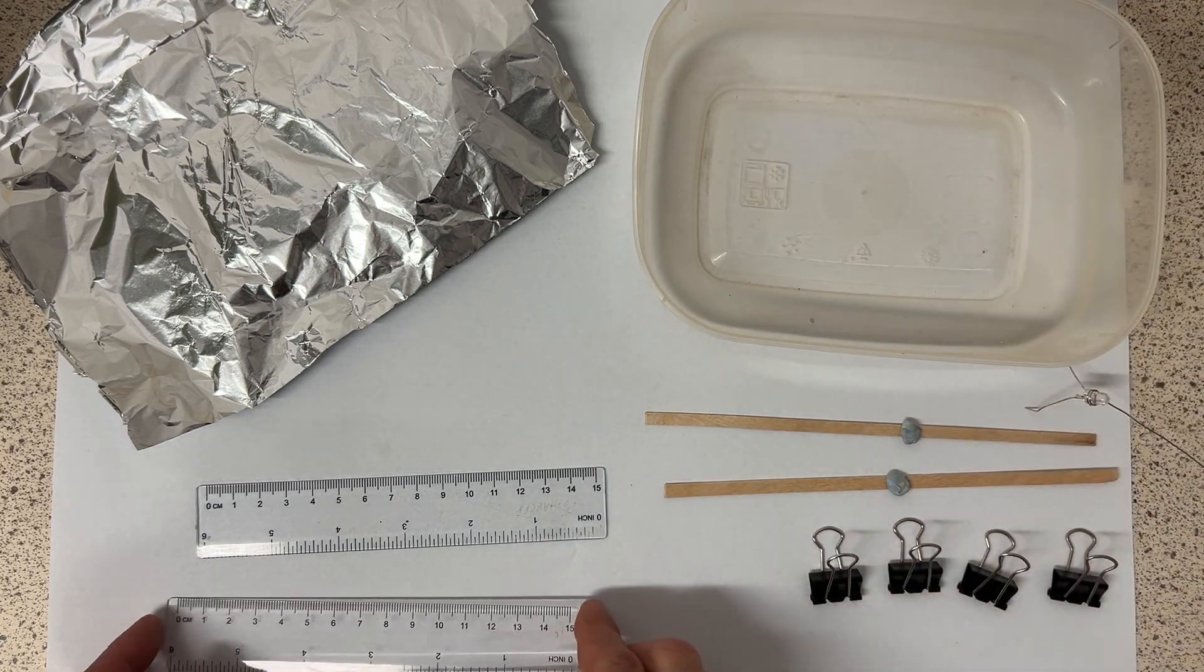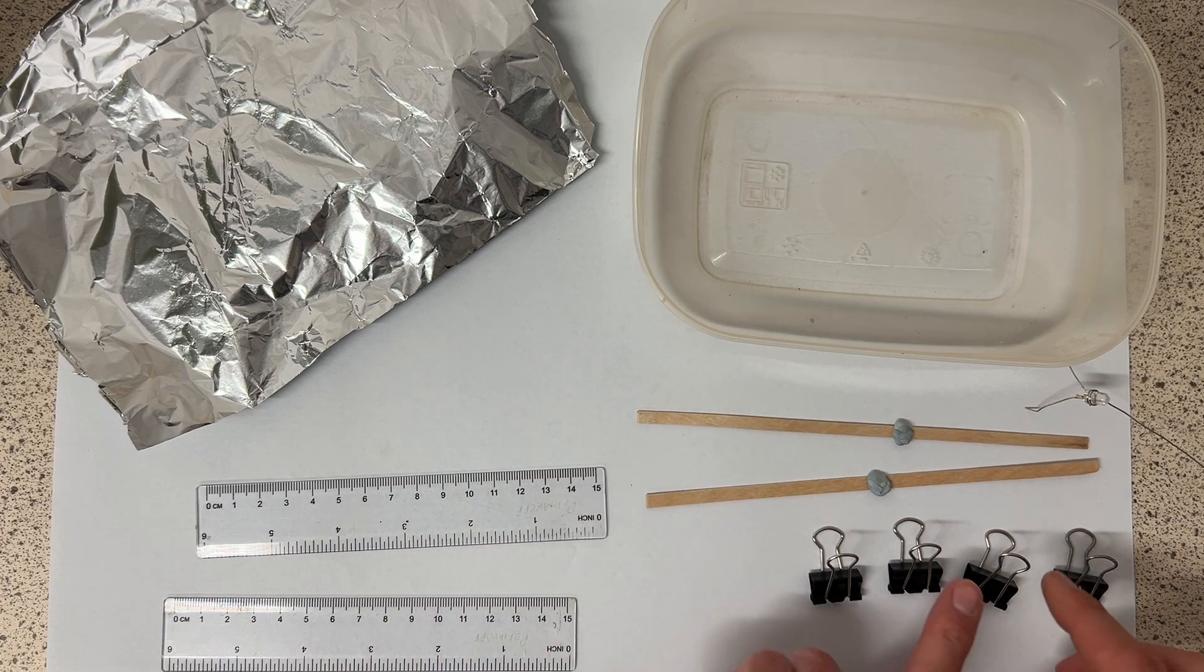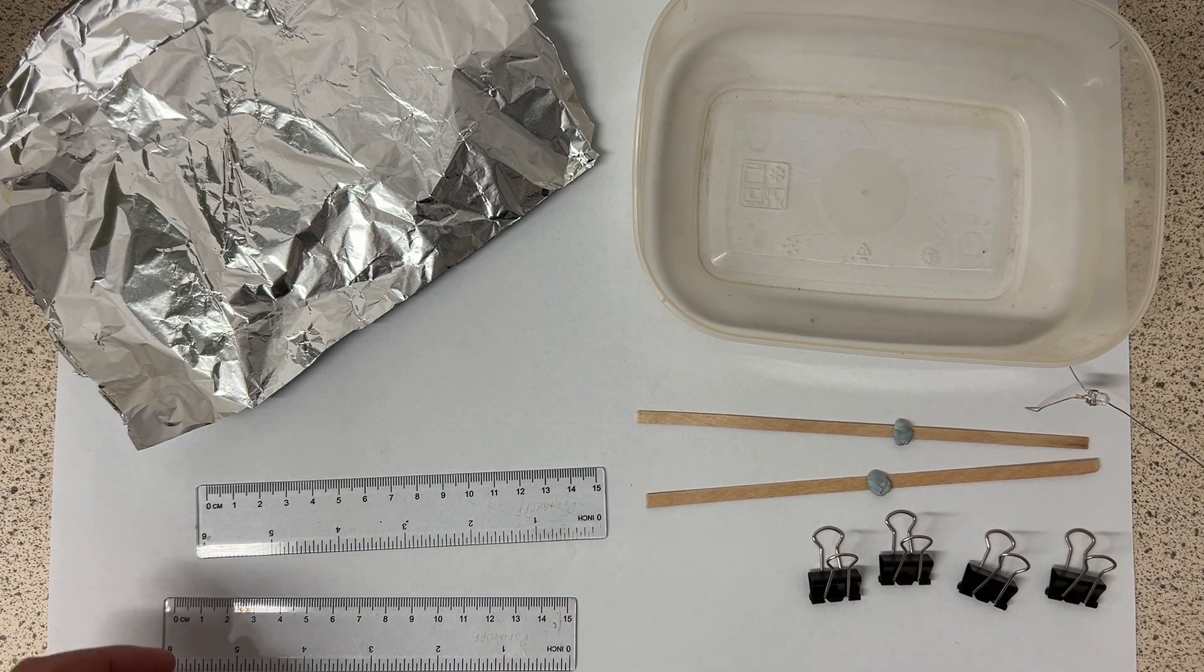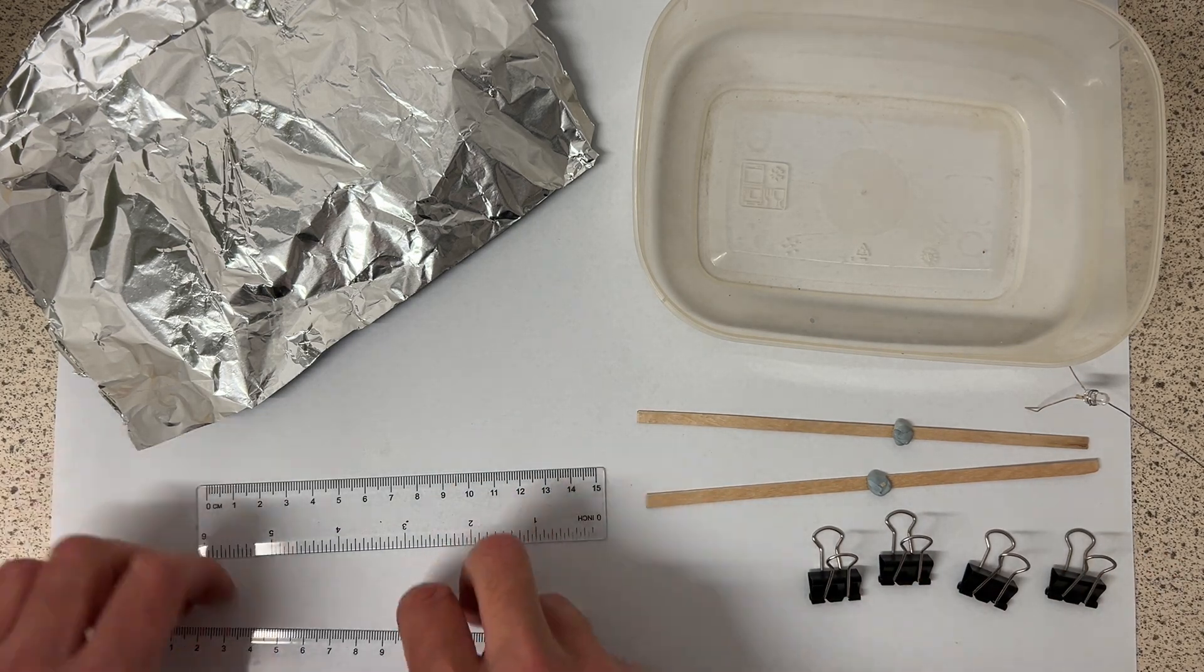To make it you need two short plastic rulers, some aluminum foil, four bulldog clips, some splints or pencils, and a plastic tub.